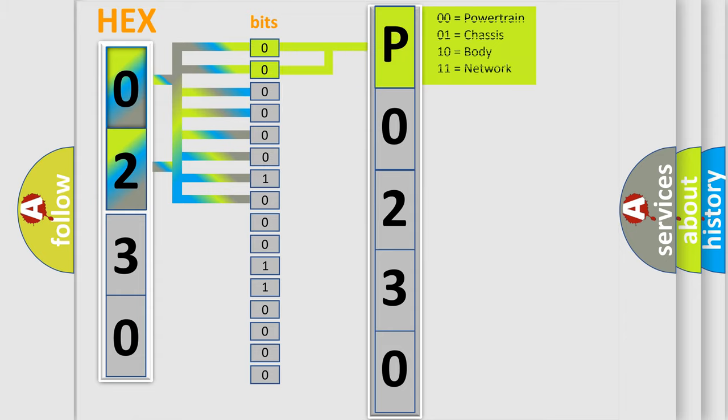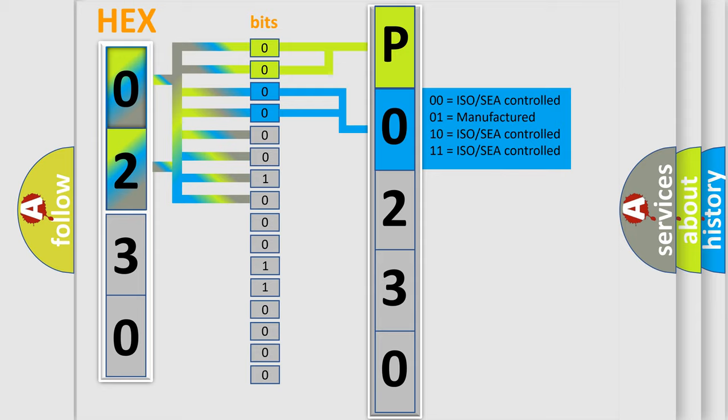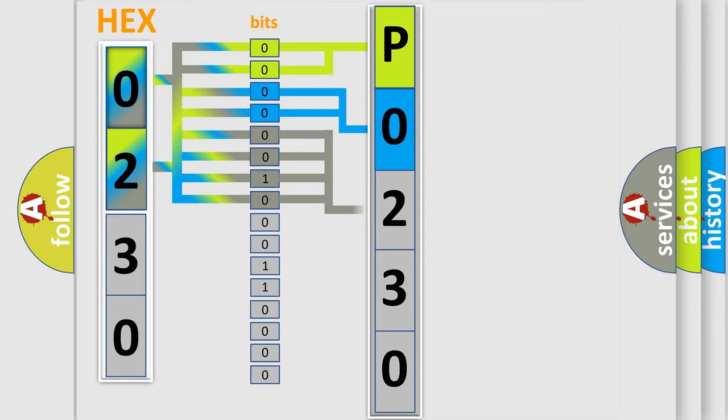By combining the first two bits, the basic character of the error code is expressed. The next two bits determine the second character. The last bit styles of the first byte define the third character of the code.